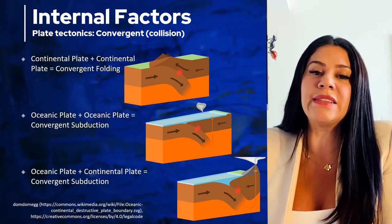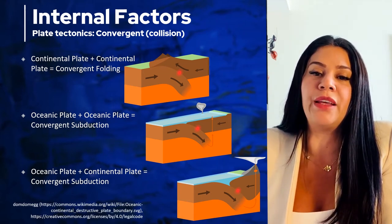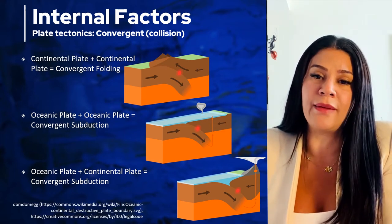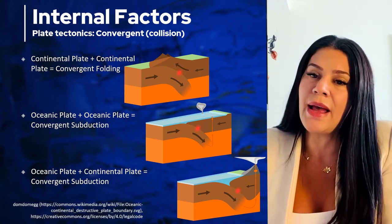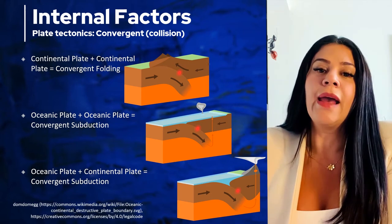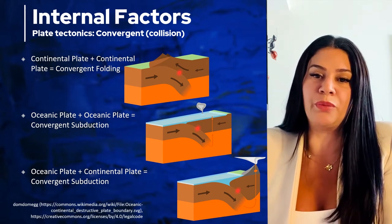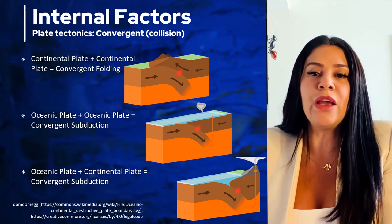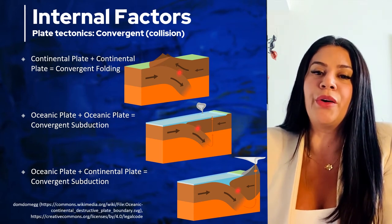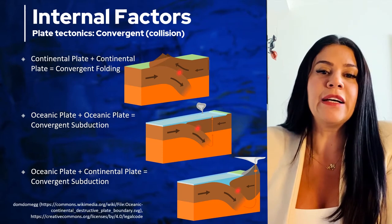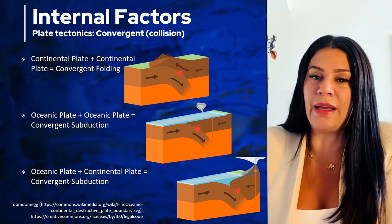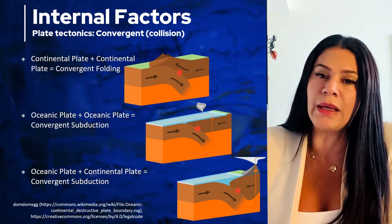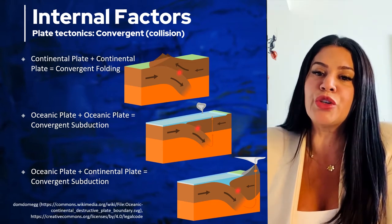Mount Everest is still growing around half an inch every year due to convergent folding. Now if we have an oceanic plate plus oceanic plate, or oceanic plate plus continental plate, we have convergent subduction. Because oceanic plates are much denser, when they collide they are forced down below the other plate into the mantle. It doesn't matter if there are two oceanic plates or an oceanic and continental plate — it's enough to have one oceanic plate colliding. This is convergent subduction.